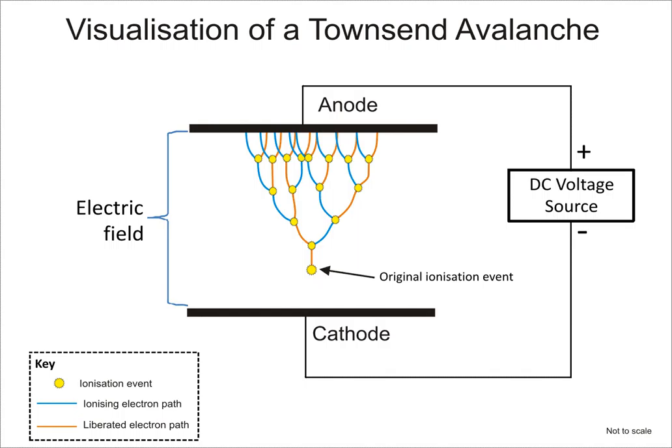Ions consisting of only a single atom are termed atomic or monatomic ions, while two or more atoms form molecular ions or polyatomic ions. In the case of physical ionization in a medium such as a gas, ions are created by ion collisions, where each generated pair consists of a free electron and a positive ion. Ions are also created by chemical interactions such as the dissolution of a salt in liquids, or by passing a direct current through a conducting solution, dissolving an anode via ionization.